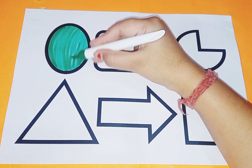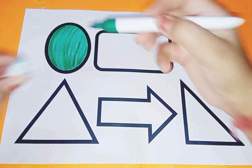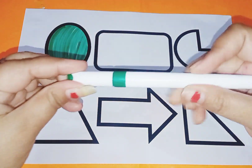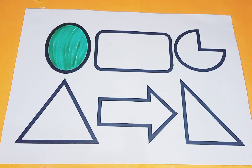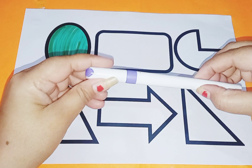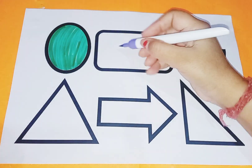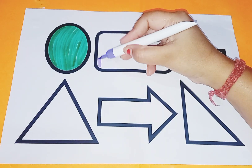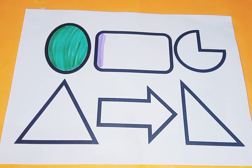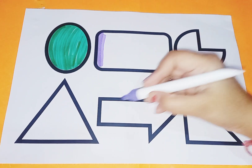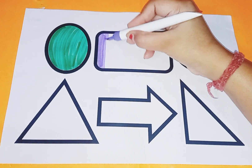Which color is this? This is green color. Next is purple color. And shape is rectangle. This is rectangle shape.